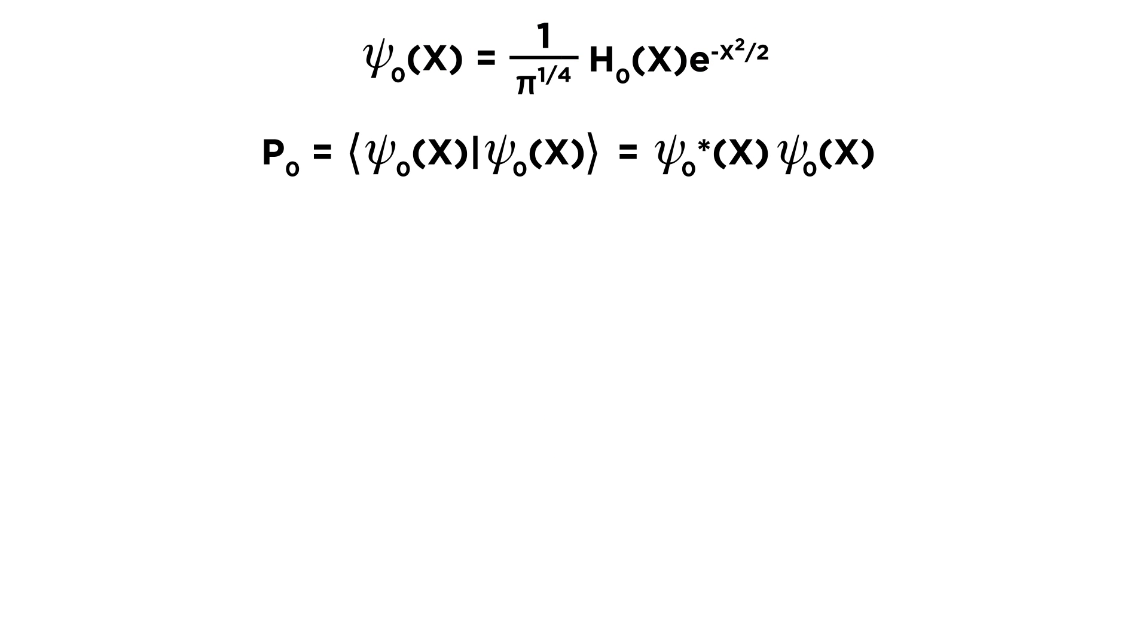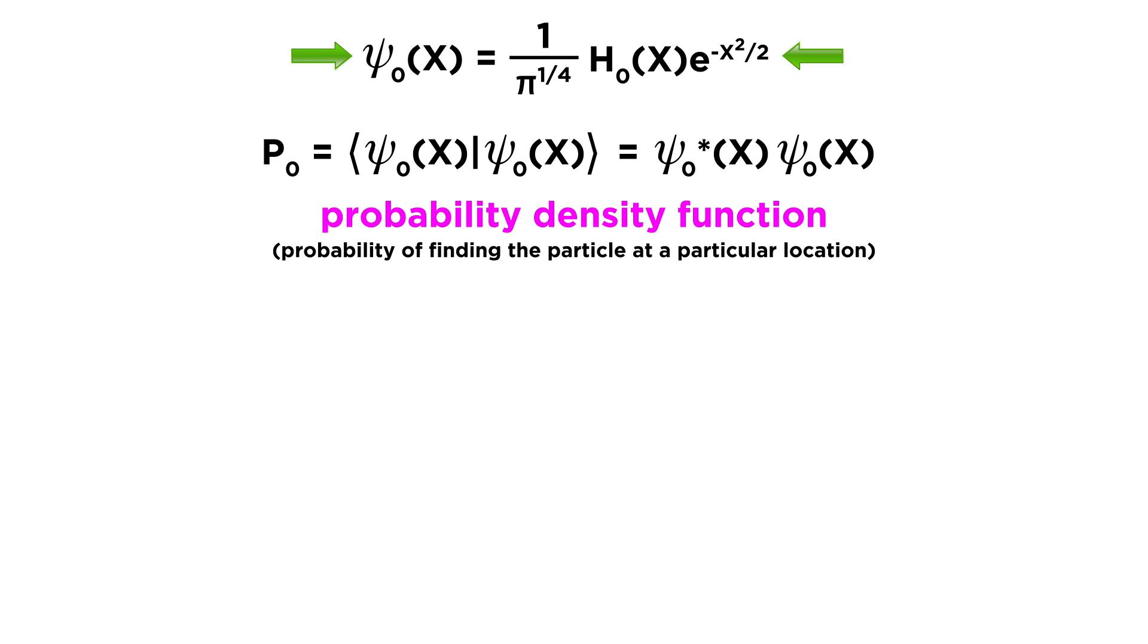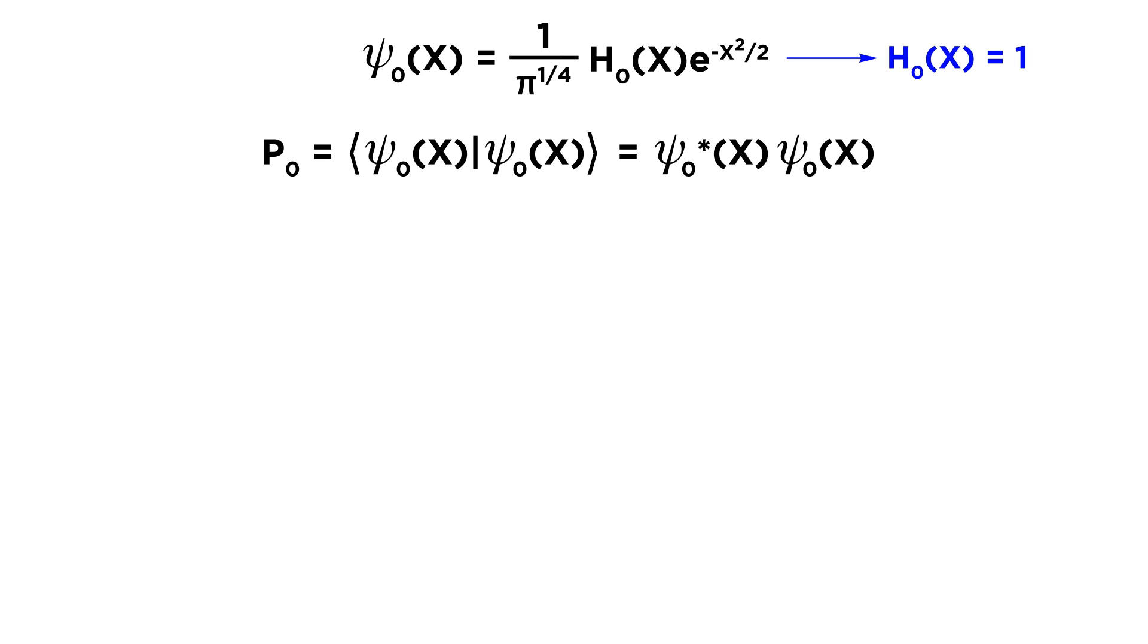Let's start by looking at the wave functions. We will use the probability density function, which we are familiar with from earlier tutorials, because this will be the easiest to understand. Once again, this function tells us the probability of finding the particle at a certain position. So let's use this in conjunction with the ground state wave function, which we derived in the previous tutorial. We found earlier that h0 of x equals 1. Now for the probability density function, we need psi star times psi, and since there are no complex numbers in this expression, psi star is the same as psi, so we are just squaring this expression.